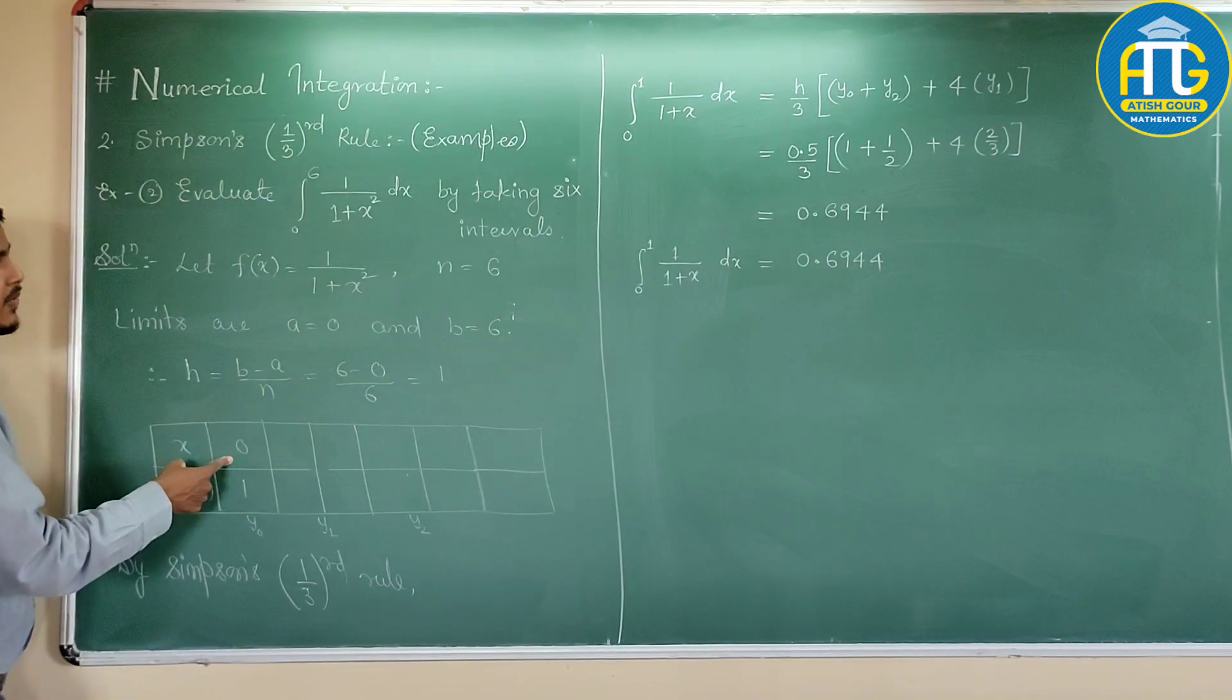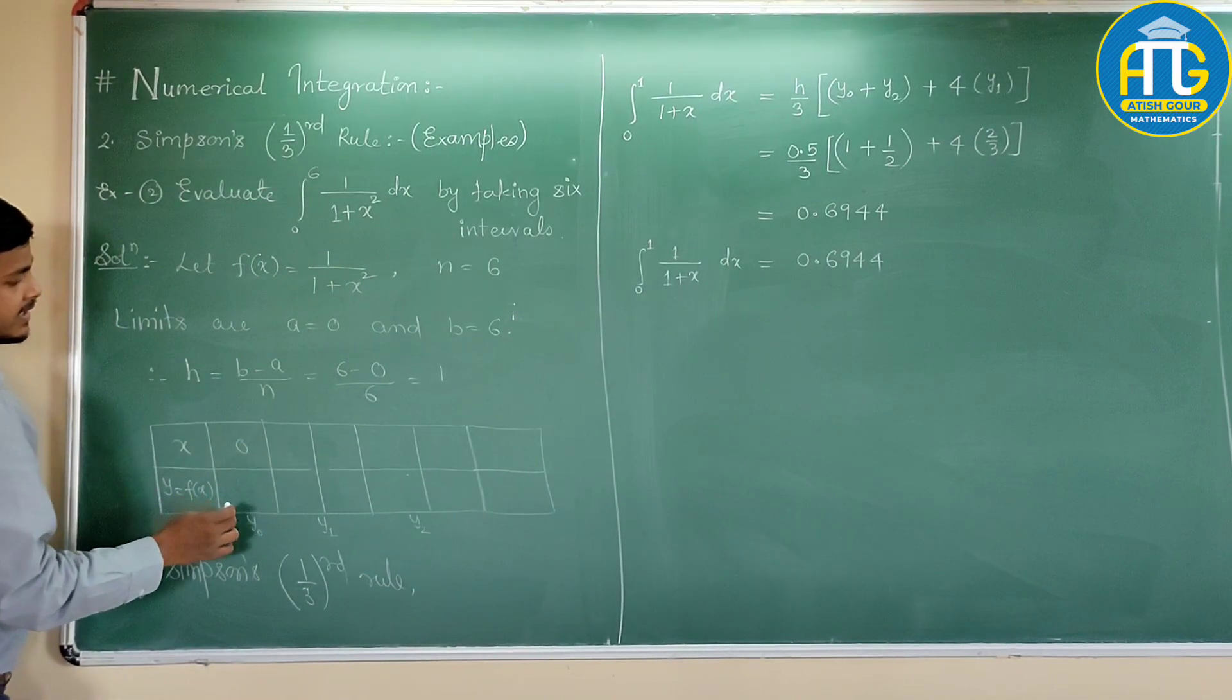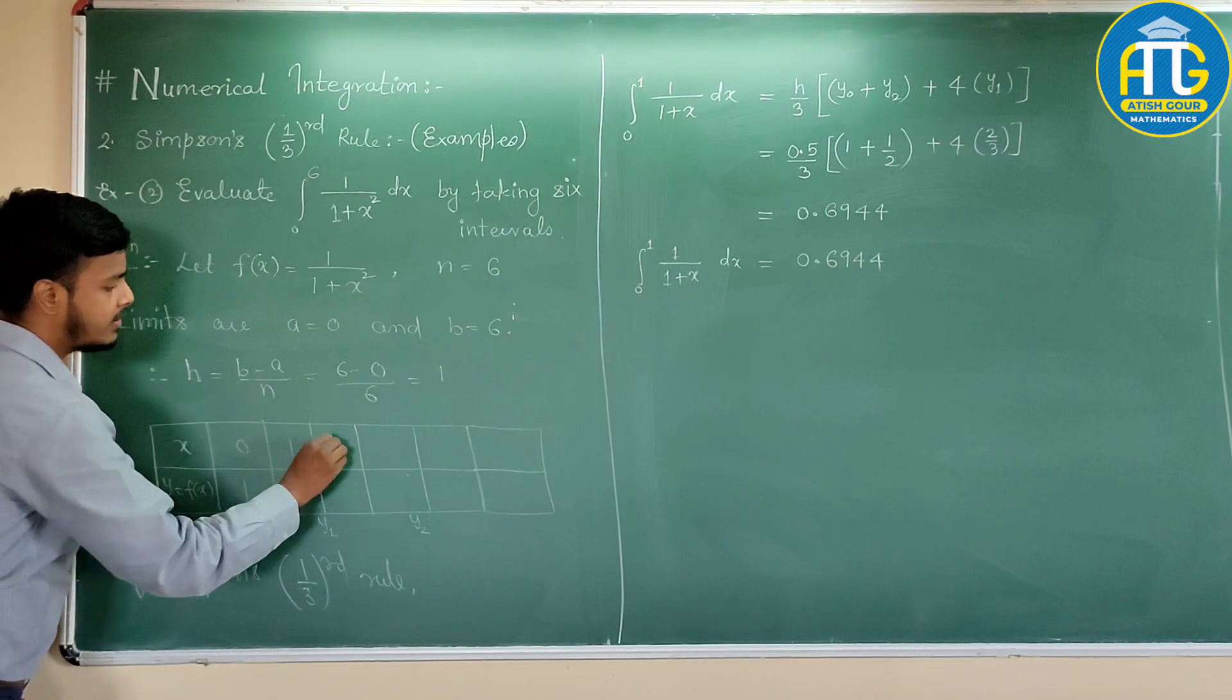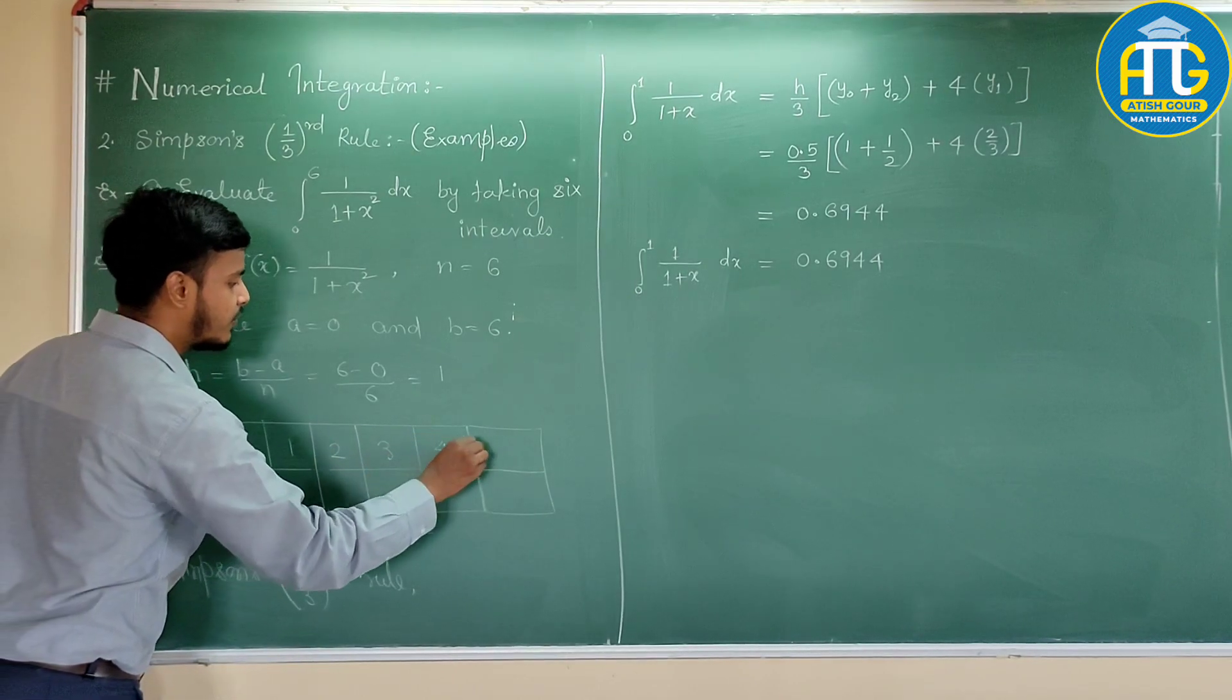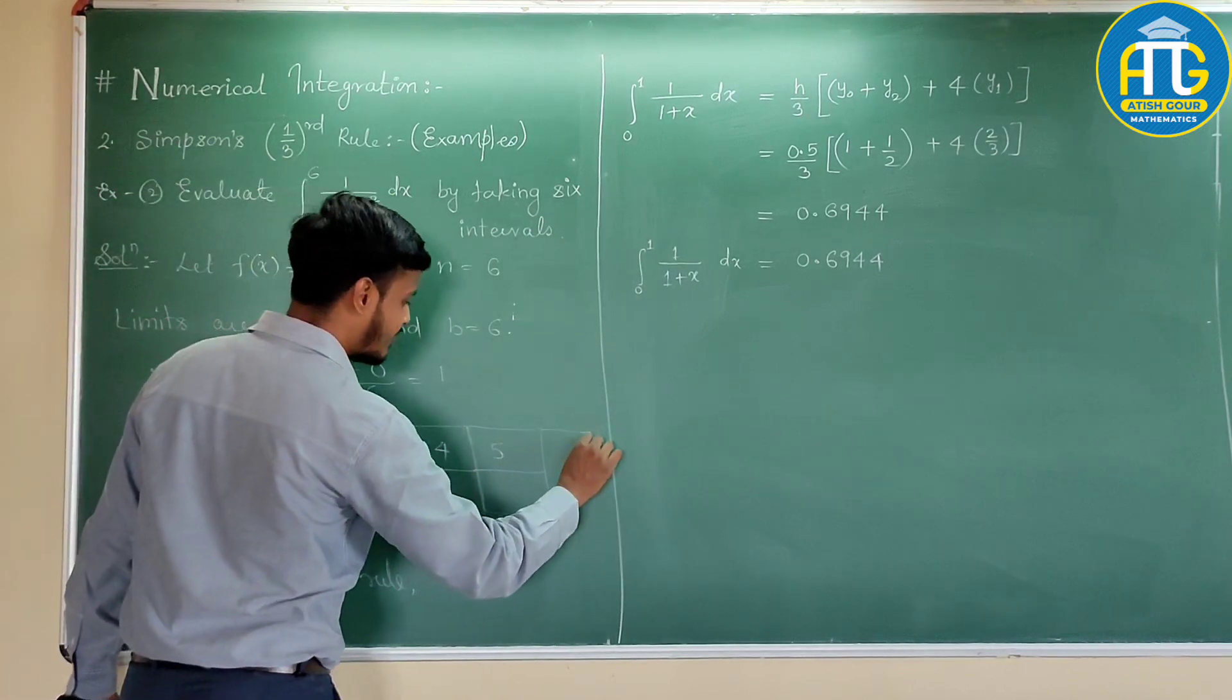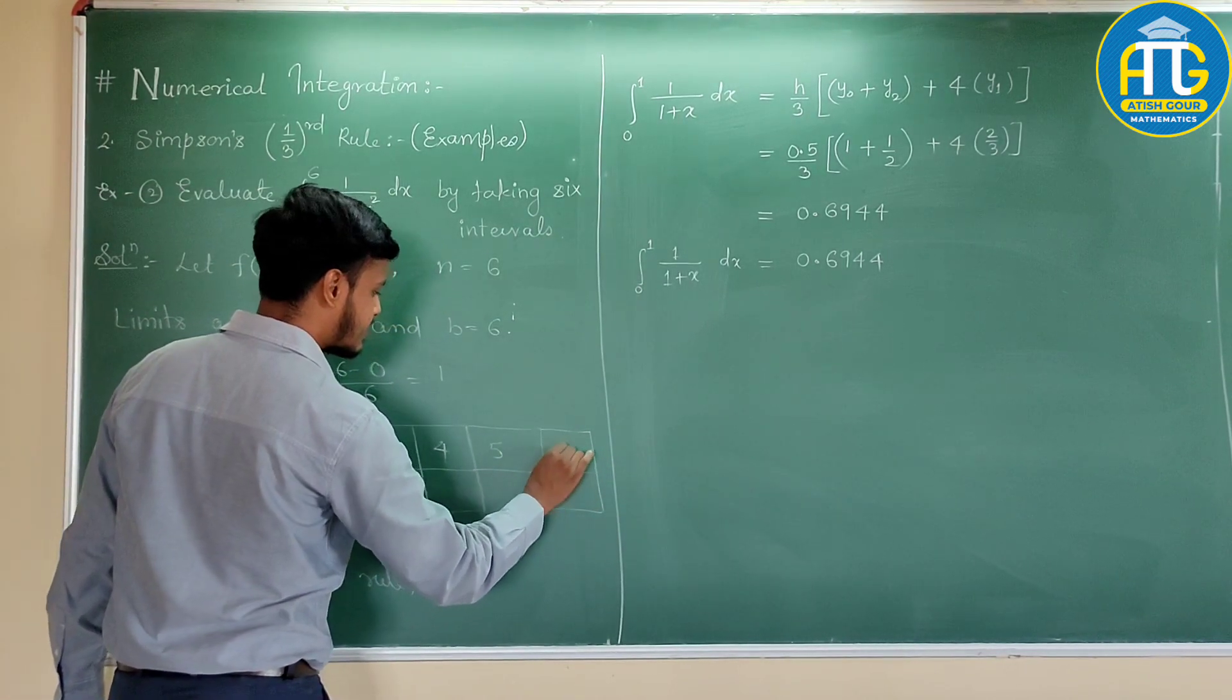We start with 0. For 0, I will get 1, then 1, 2, 3, 4, 5 and we have one more value, that's 6.